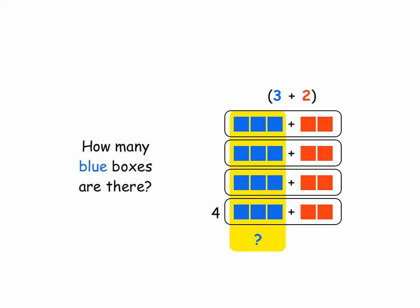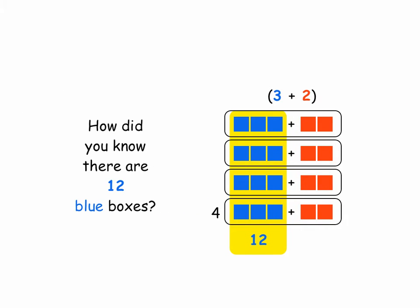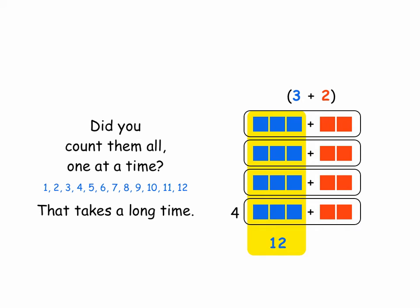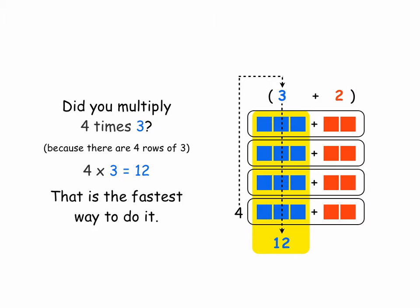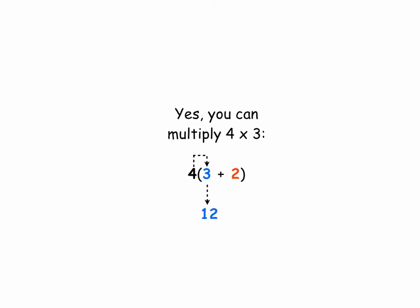How many blue boxes are there? Counting them one at a time takes a long time. Did you count them by threes? Three, six, nine, twelve — that's faster. Or did you multiply four times three, because there are four rows of three? Four times three is twelve. That is the fastest way to do it. Yes, you can multiply four times three and get twelve.